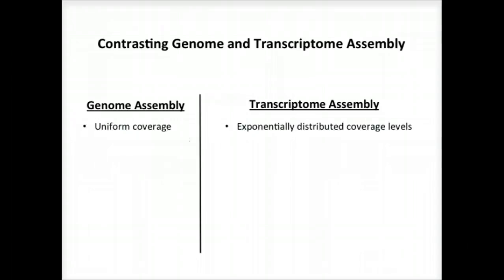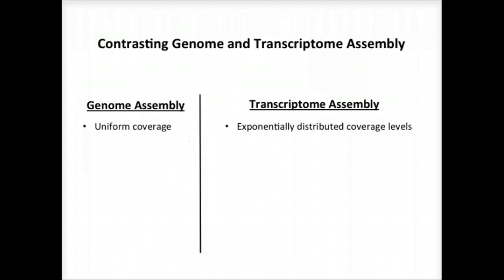Some of the key differences between genome and transcriptome assemblers include the following. Genome assemblers expect that the read coverage is going to be rather uniform, and will often discard sequences that occur at high coverage as repetitive sequences. Transcriptome assembly needs to consider a wide range of coverage levels spanning several orders of magnitude, since sequences with high coverage are more likely to represent highly expressed transcripts instead of repeats.